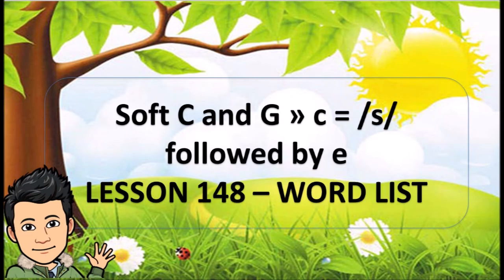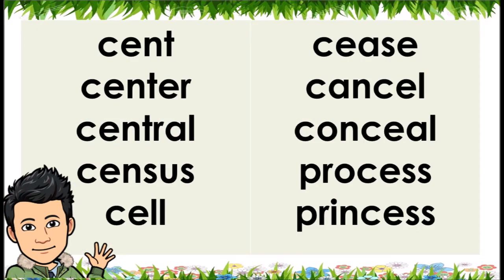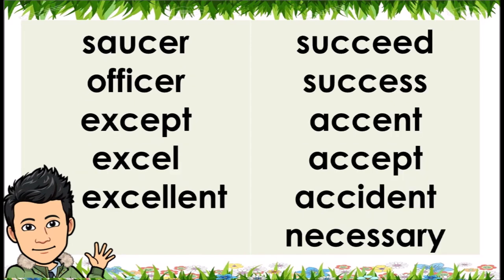Lesson 148, Word List: Soft C and G, C equals /S/ followed by E. Sent, Center, Central, Census, Cell, Cancel, Conceal, Process, Princess, Saucer, Officer, Accept, Excel, Excellent, Succeed, Success, Accent, Accept, Accident, Necessary.